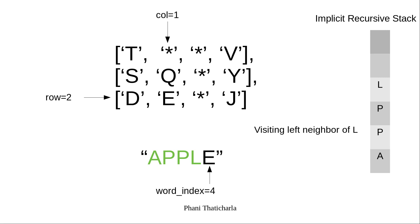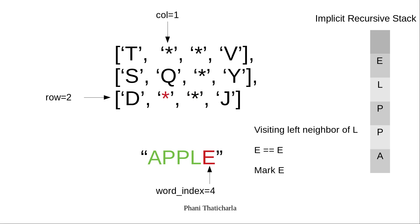Now we move to the left neighbor of letter L. Here E is equal to E. So we save this letter, mark it with a star, and increment the word index by 1.